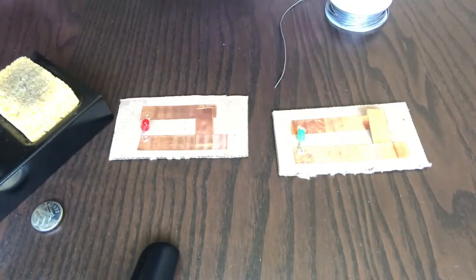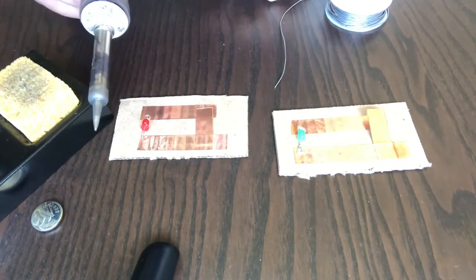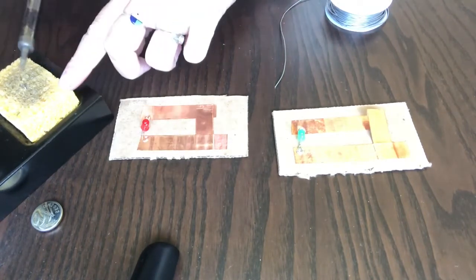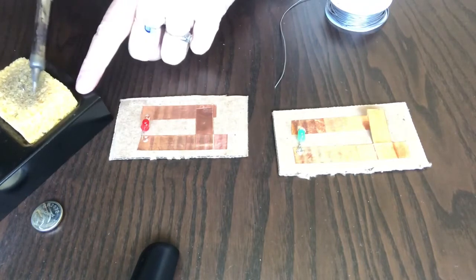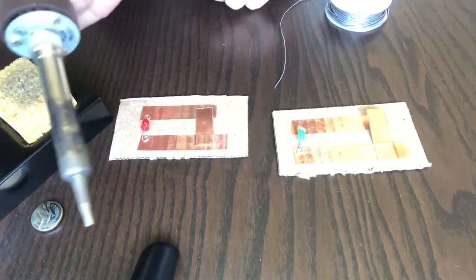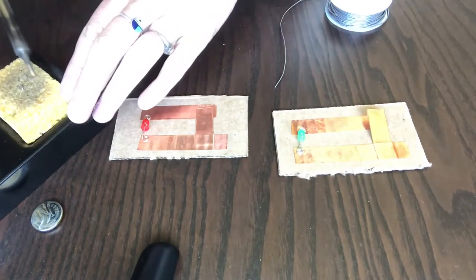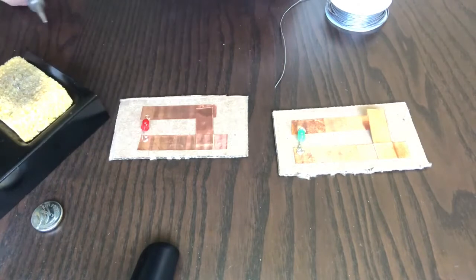Now we're going to solder the LED legs to the copper tape. I like to keep my soldering iron close to me with a wet sponge. And I will gently wipe the tip to clean it to make sure it's nice and shiny. If you have a dull looking tip, it's just not going to conduct heat as well.